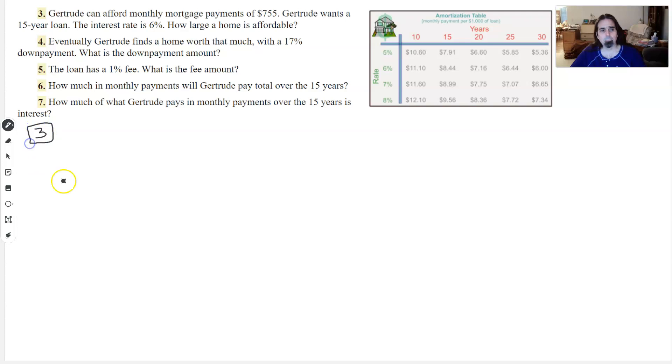So she wants to pay about $755 for her mortgage. There's things she can't control. The interest rate is currently about 6% and she wants a 15-year loan. That means the number from the amortization table is $8.44.